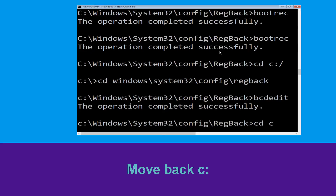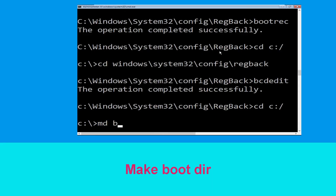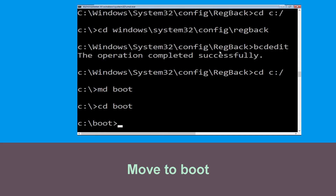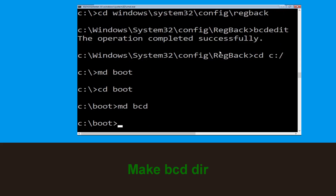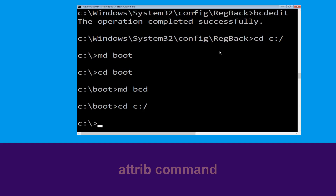Now type cd c:\ and hit Enter. Now type cd boot and hit Enter. Now type md bcd and simply hit Enter to execute this command. Now type cd c:\ and simply hit Enter. Now type attrib c:\boot\bcd -h -r -s and hit Enter.